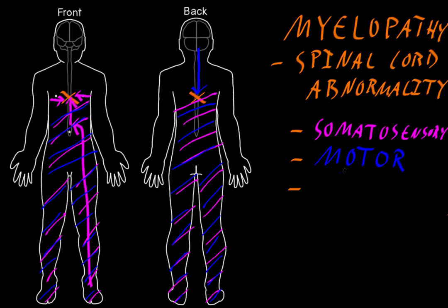Where things get a little more complicated is that you may also get some lower motor neuron abnormalities right at the level of the lesion, because in the spinal cord are the somas for those lower motor neurons, which project out to their myotome — the muscles innervated by lower motor neurons coming out of that level of the spinal cord. So depending on where the problem is, you may find lower motor neuron abnormalities, but most often we're seeing upper motor neuron abnormalities with myelopathy.